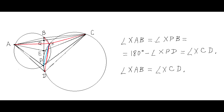Inscribed angles XAB and XPB are equal since they are subtended by the same arc XB of the same circle. Since angle XPD is the supplementary angle to angle XPB, we obtain that angles XAB and XCD are equal — this is the first property required for point X in this problem.